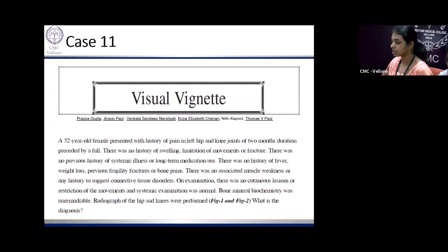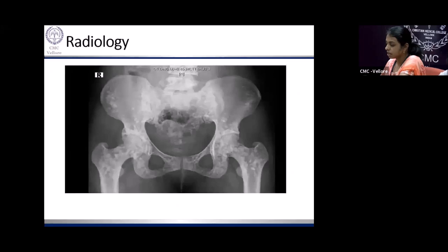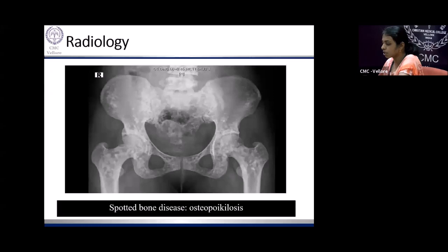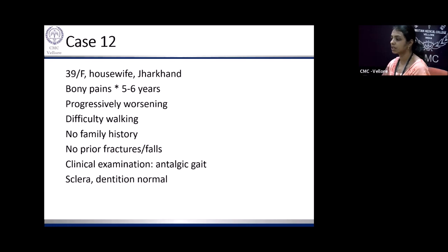Another case: a 32-year-old lady with pain in her hip and knee joints. X-ray of the pelvis showed obvious spots in the bone. This is what we call spotted bone disease or osteopoikilosis — another sclerotic bone disease.